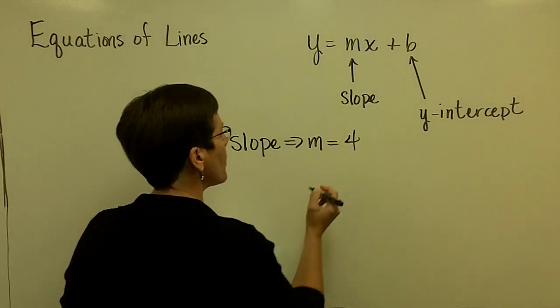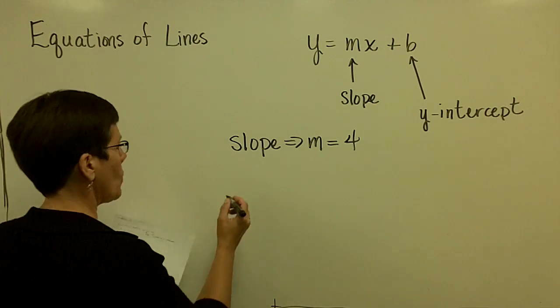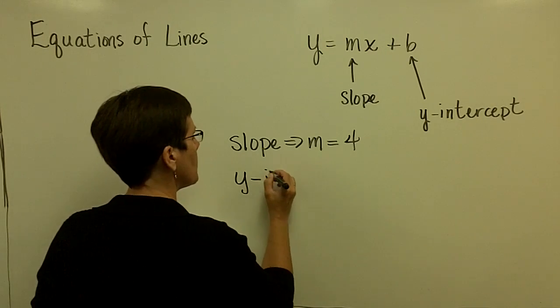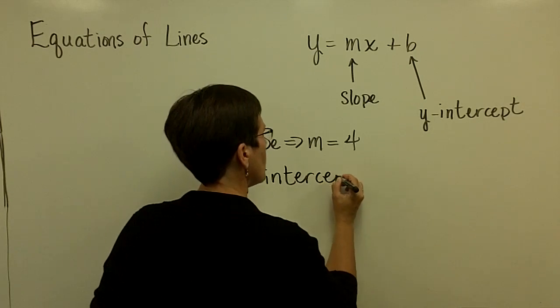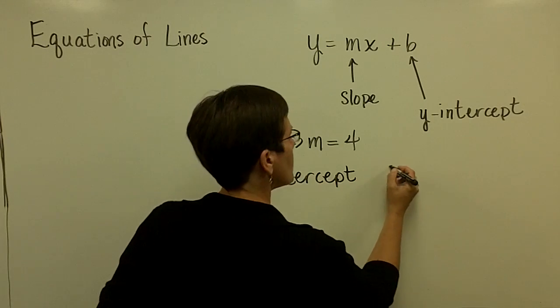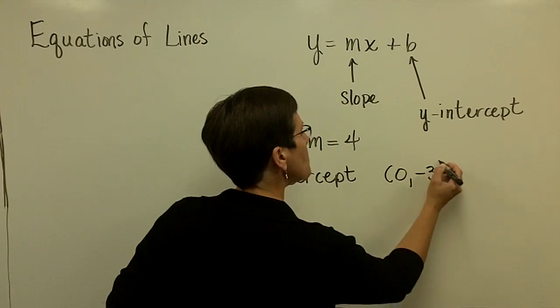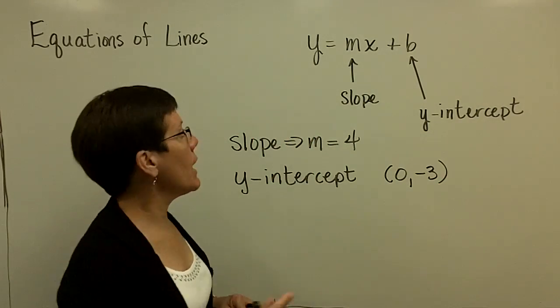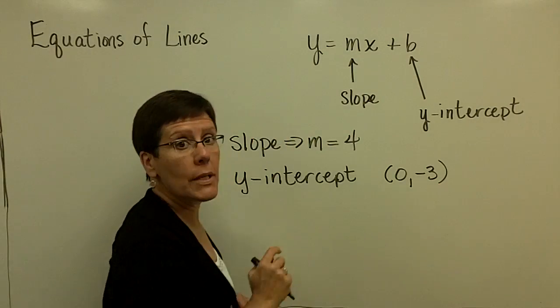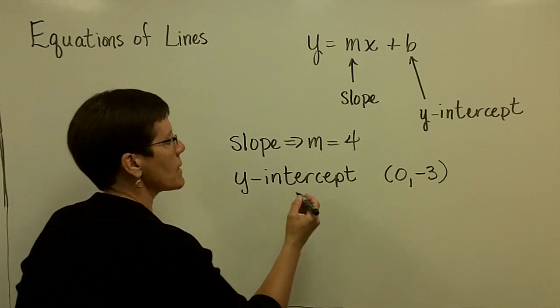is 4, and I tell you that the y-intercept is 0 comma negative 3, then you should be able to put that in for m and for b in this statement, y equals mx plus b,